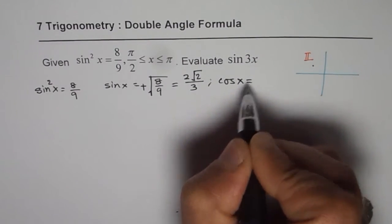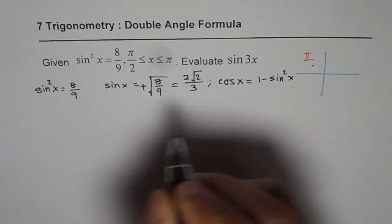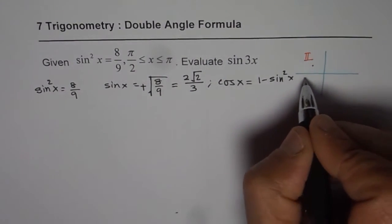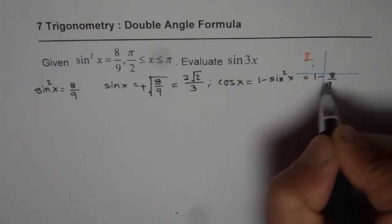Cos²x will equal 1 - sin²x. So sin²x is given to us as 8/9. Let me just continue here. 1 - 8/9.